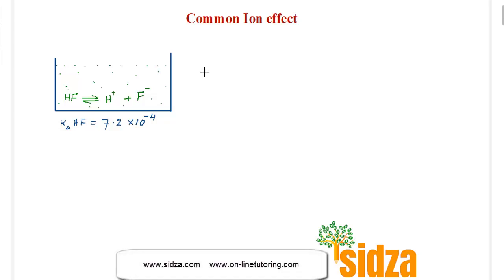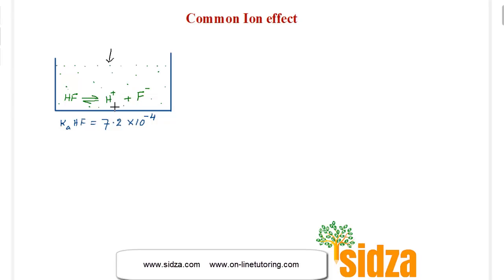Common ion effect: if you take hydrofluoric acid, which is a weak acid, it dissociates into H⁺ and F⁻ ions. The dissociation constant of HF is 7.2 × 10⁻⁴. Now, if I add something to the solution which has a common ion — either H⁺ or the fluoride ion — let's see what happens.